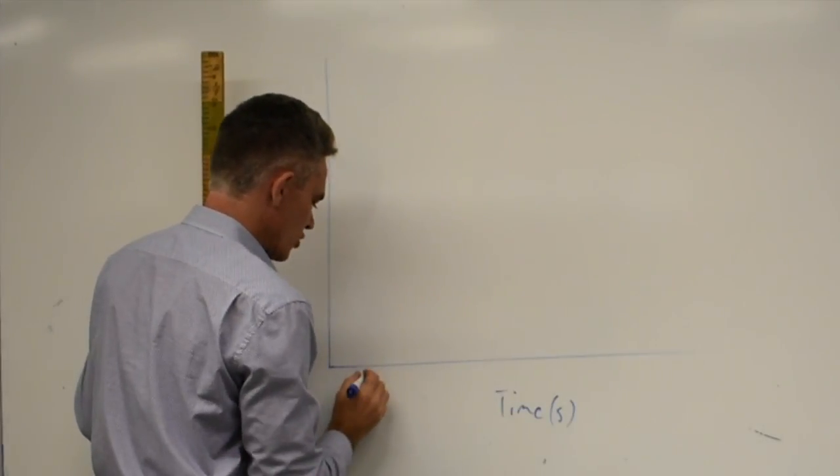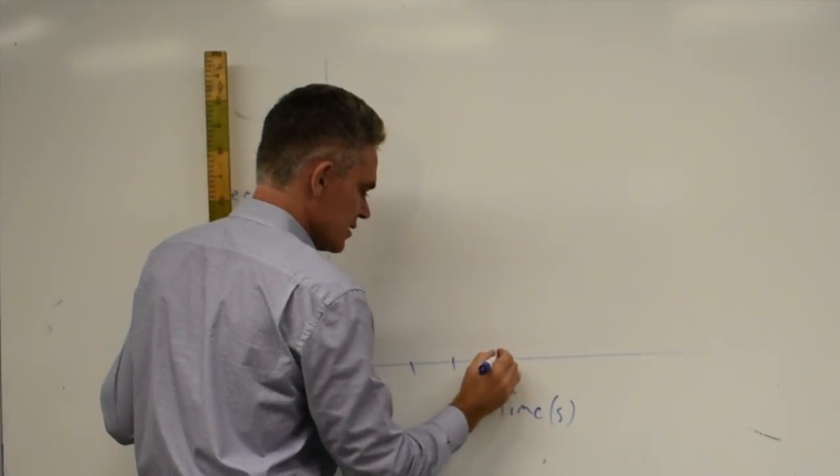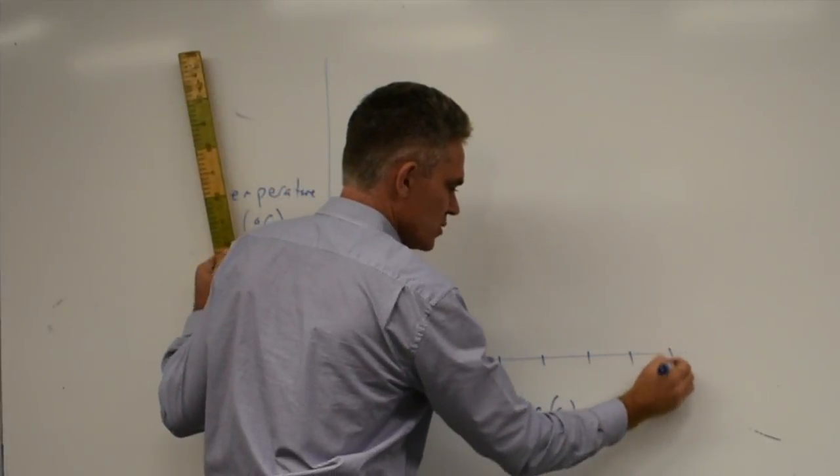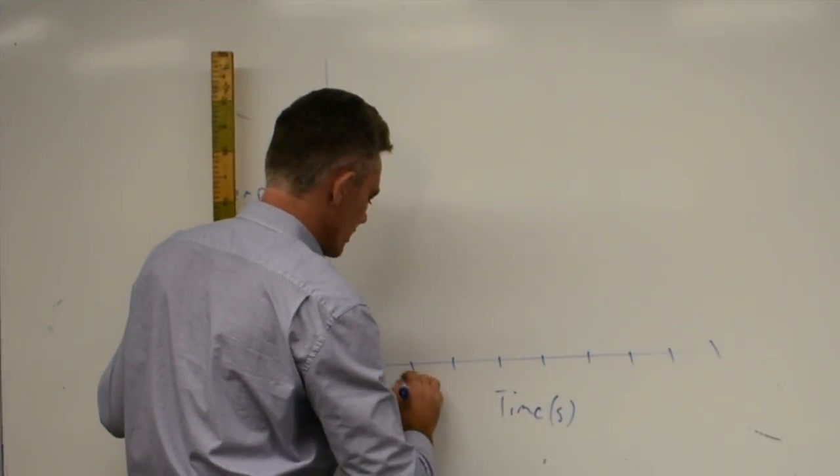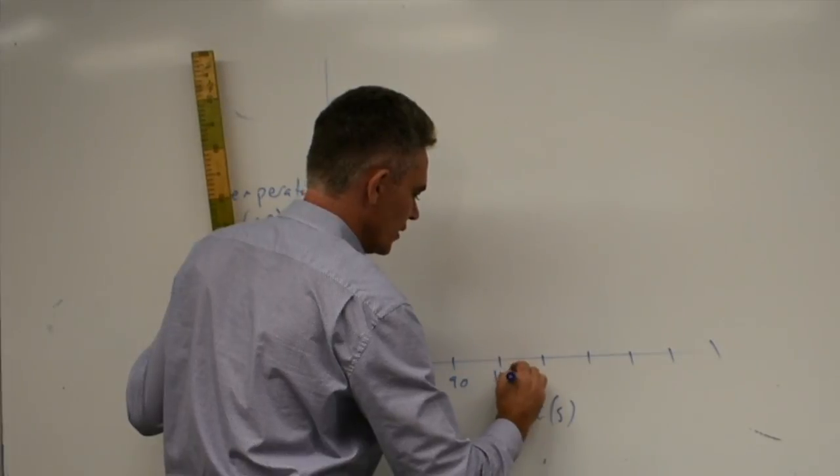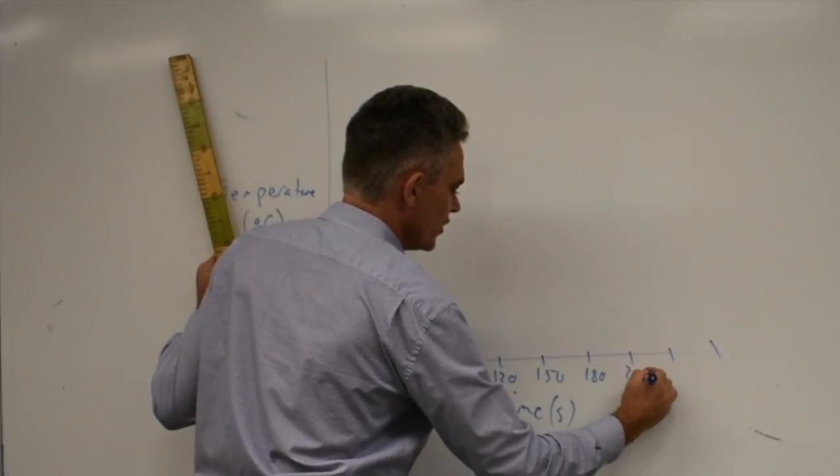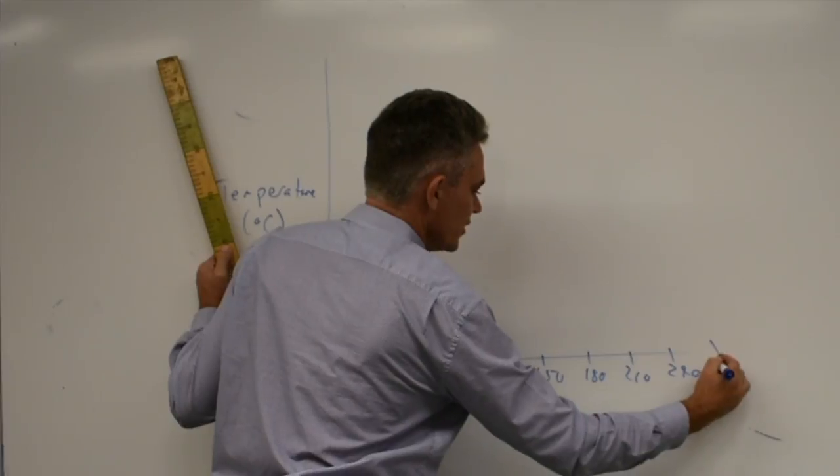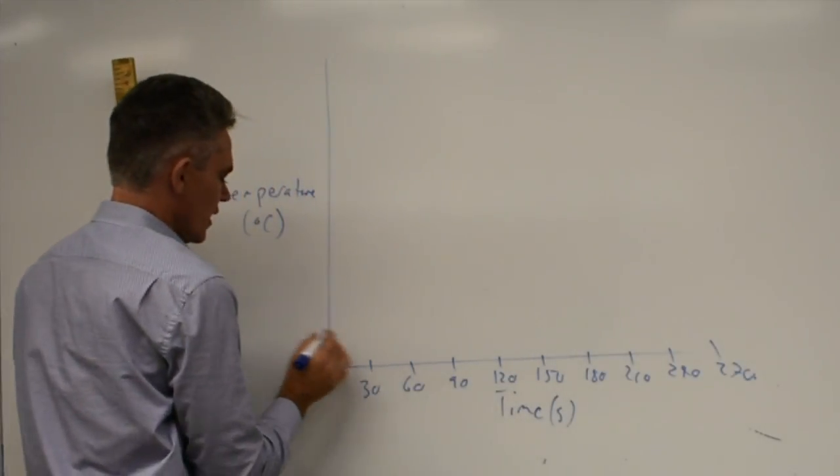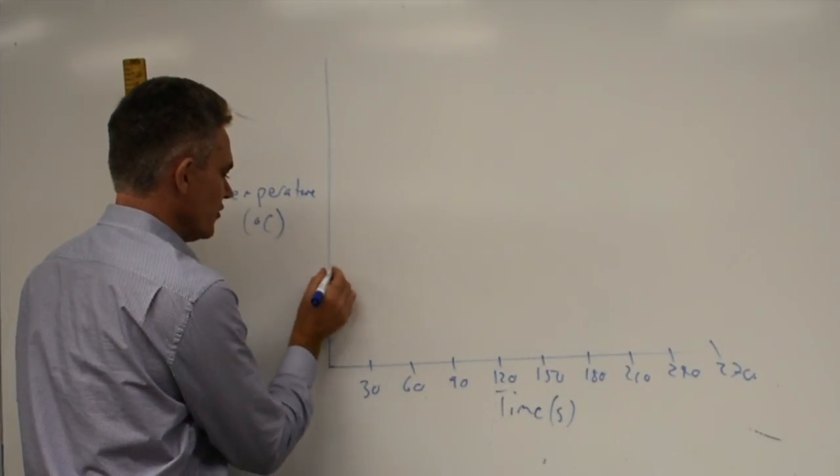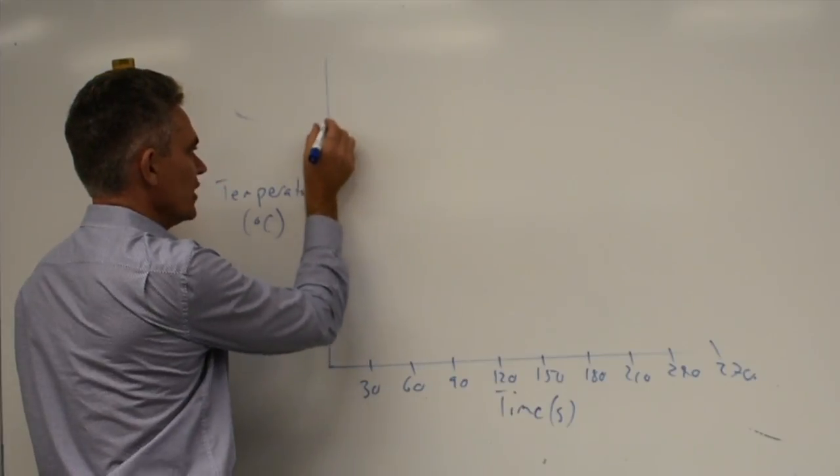And so we have to make sure that we've got equal distances here for equal times. So it was like 30, 60, 90, 120, 150, 180, 210, 240, 270. And same here, 10, 20, 30, 40, 50, 60, 70, 80, 90, 100 up to 100 degrees Celsius.